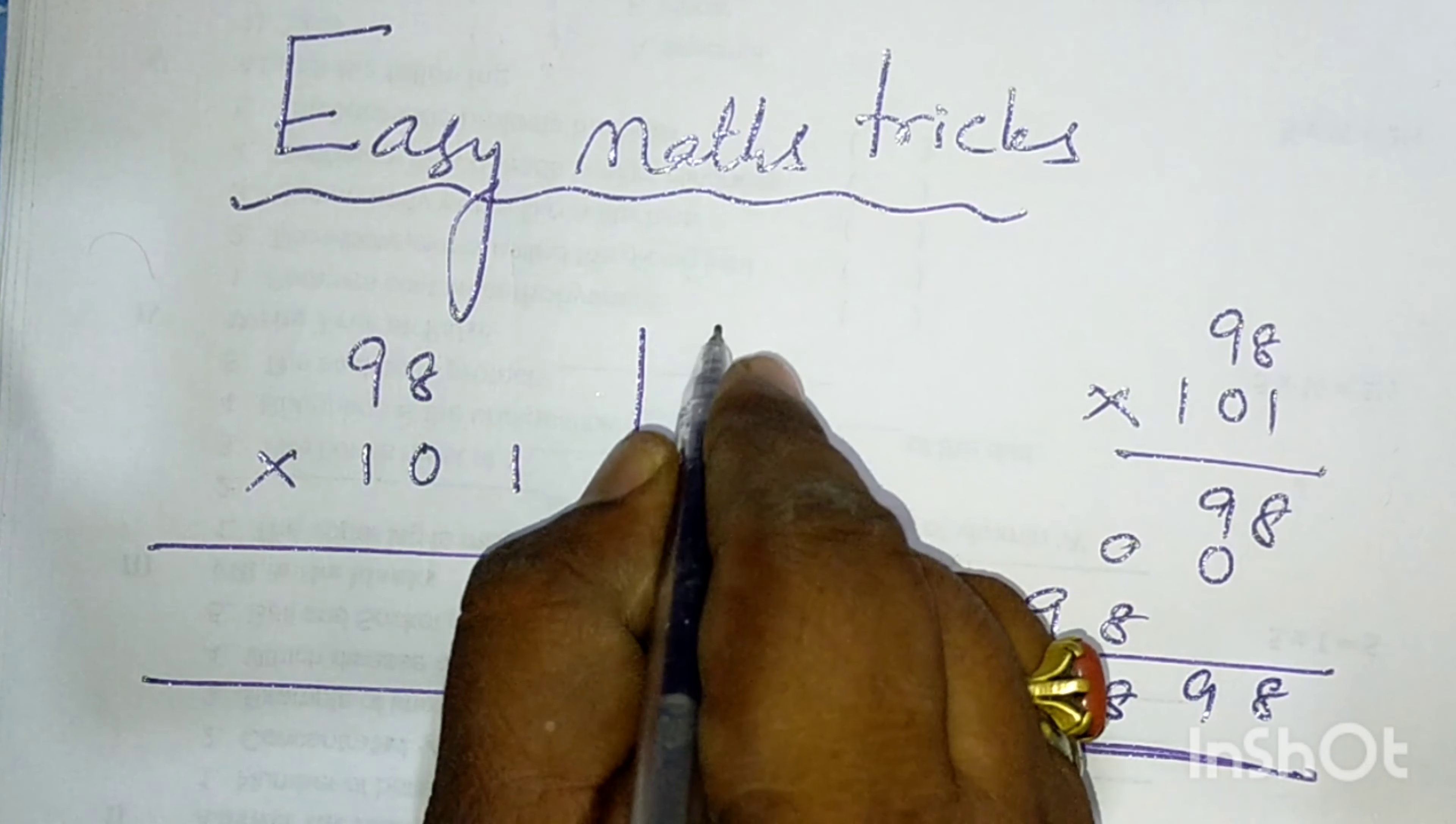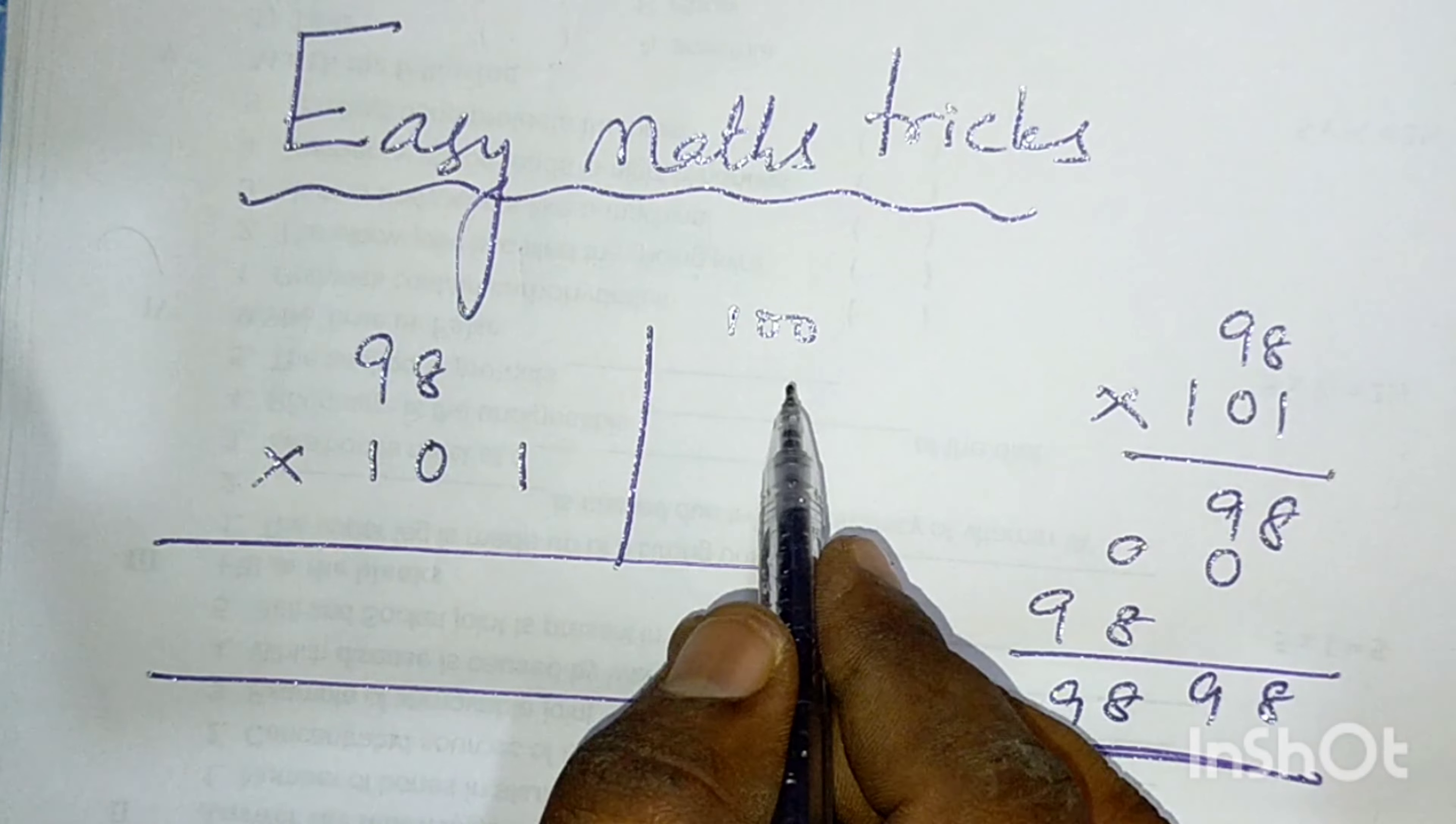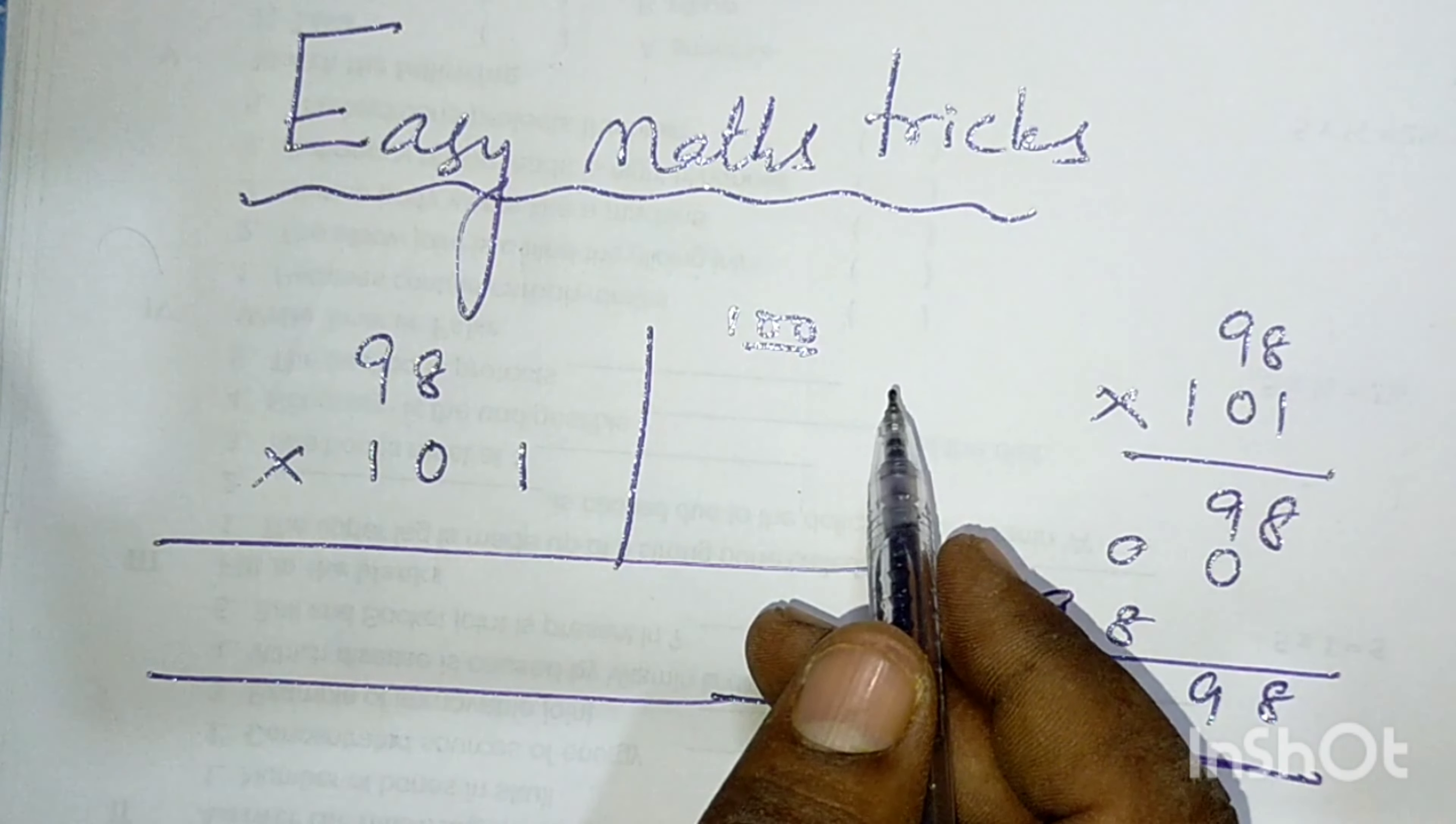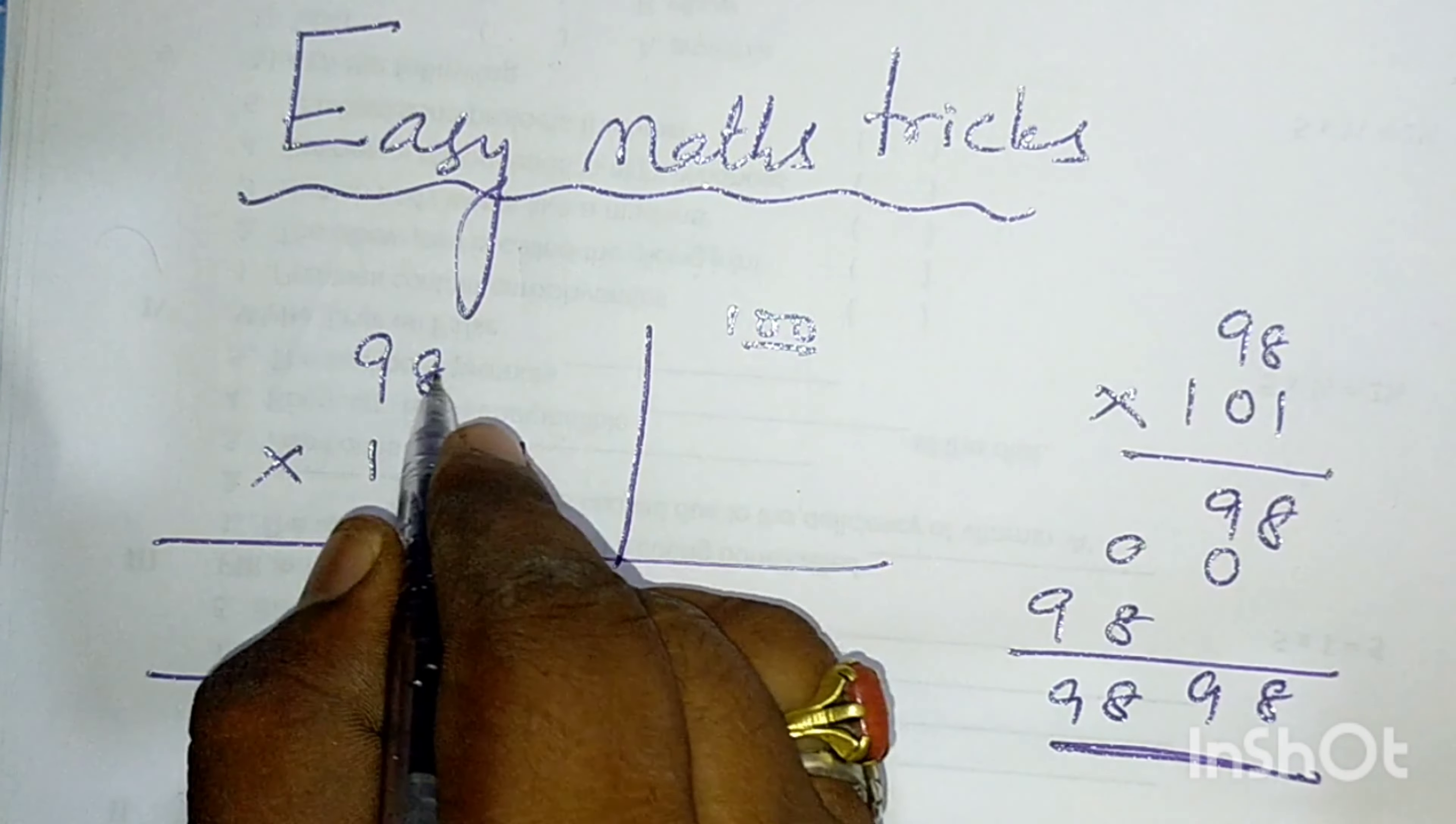First you take it is very near to 100. 100 means two digit number, here it is 100 is a three digit number but in this two zeros are there. Always remember how many zeros are there in a particular hundred and thousand and ten thousand. Here two zeros are there means 100 minus 2 is 98.